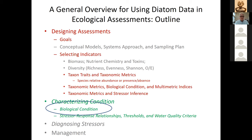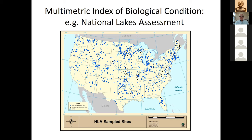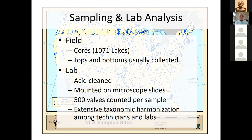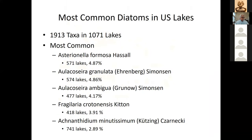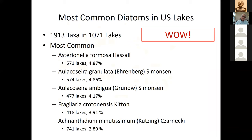Now I'll provide examples of characterizing condition — biological condition first, then physical-chemical stressors. The first example is using a multi-metric index for assessing biological condition in the National Lakes Assessment, where about 1,000 samples were taken across the U.S. Core tops and bottoms were collected, and standard laboratory procedures were used to get relative abundance of species. There were 1,913 taxa observed across 1,071 lakes, including the top five diatoms found in lakes across the U.S.